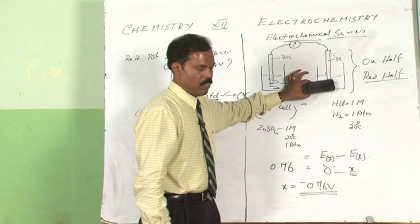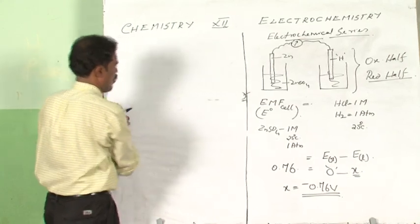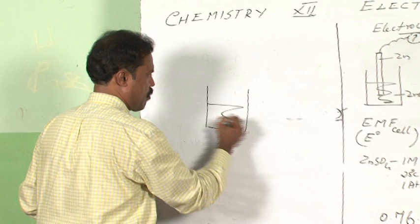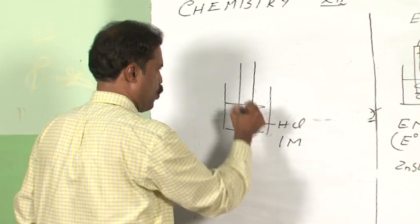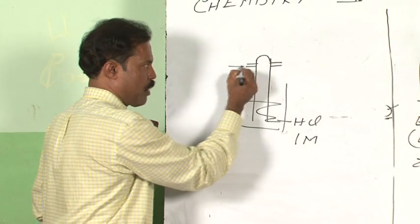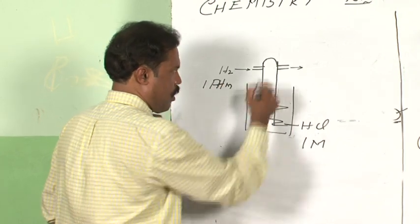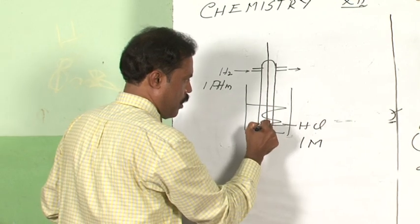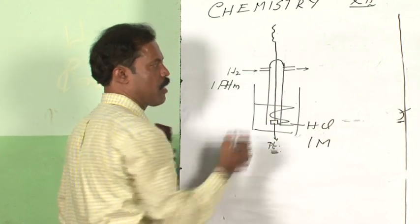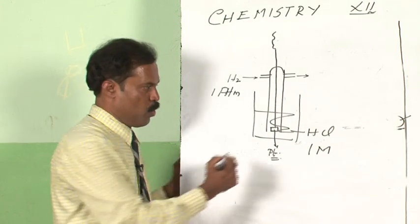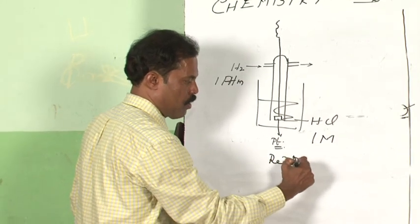Now let us see how exactly the hydrogen electrode is constructed. There is a solution of hydrochloric acid in a container whose molarity is 1. We take a glass tube through which hydrogen gas can be passed. Hydrogen gas is passed through this glass tube at 1 atmosphere. Through the glass tube there is a metal conductor, and at the end of the conductor there is a platinum plate used for making electrical contact. This entire arrangement is called the hydrogen electrode and its reduction potential value is taken as 0.